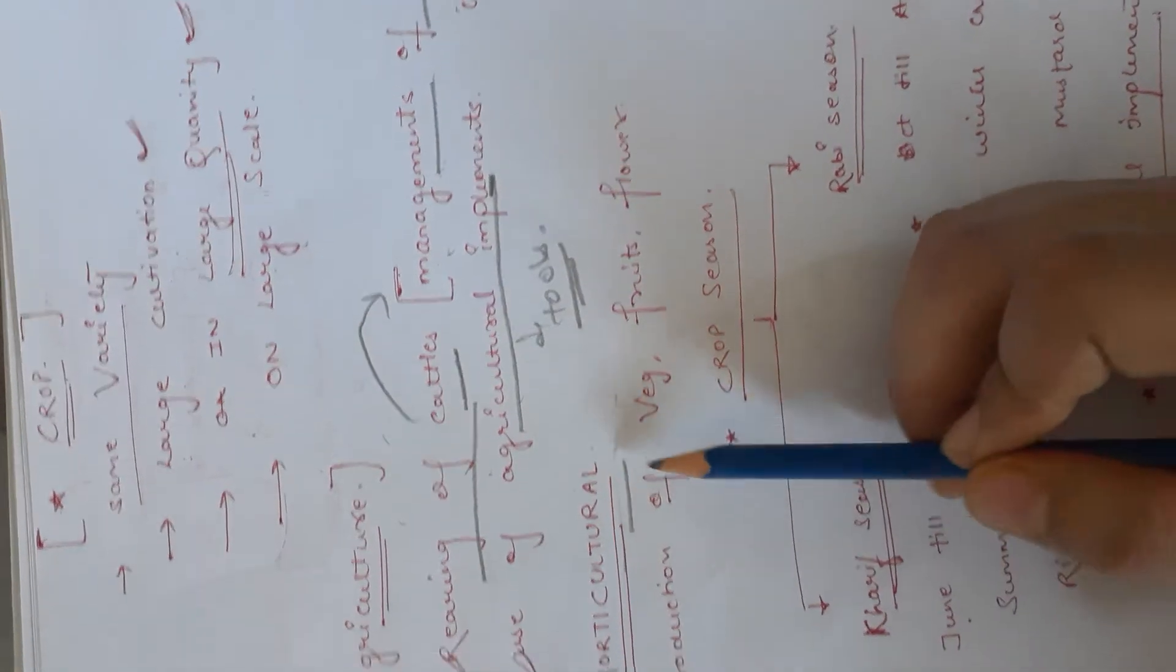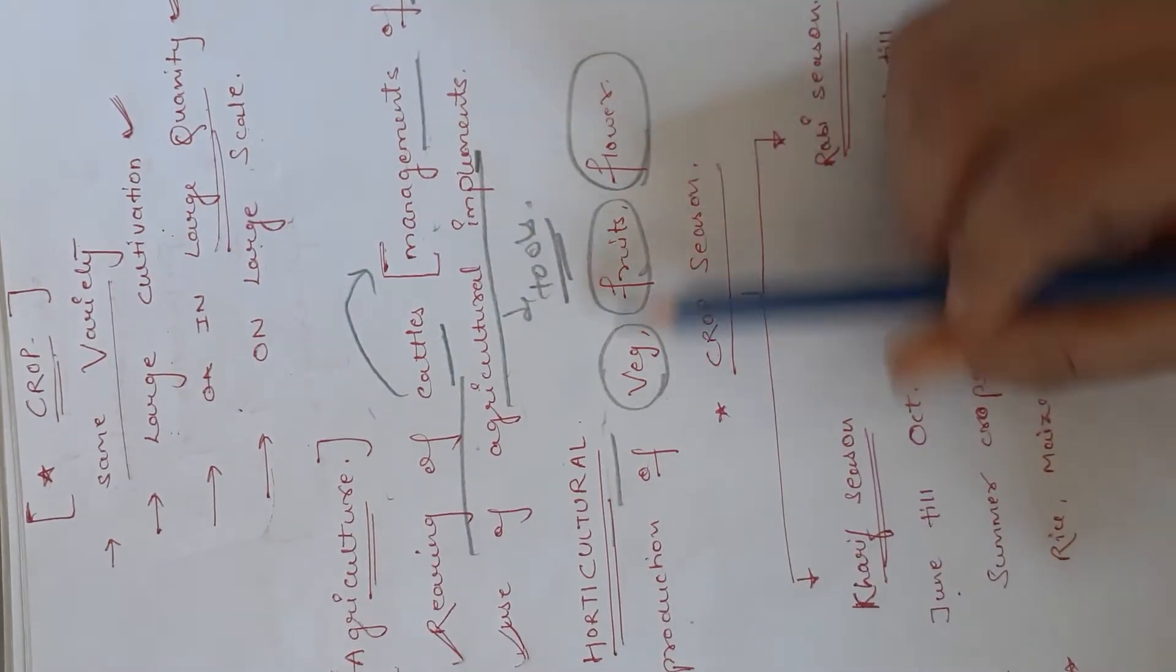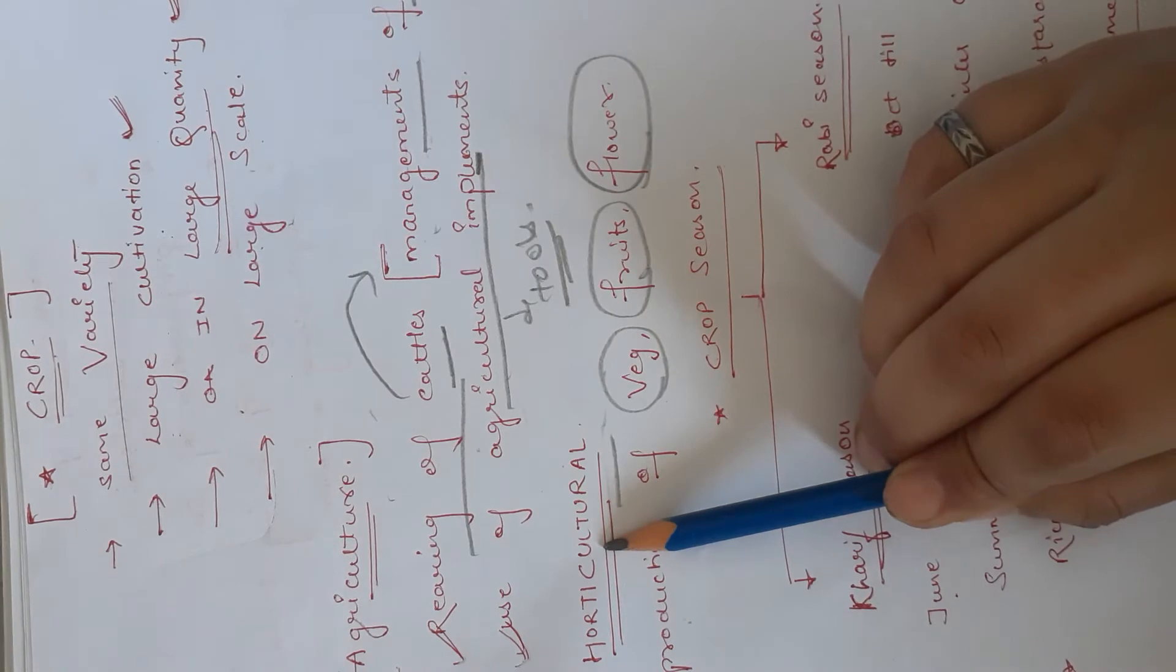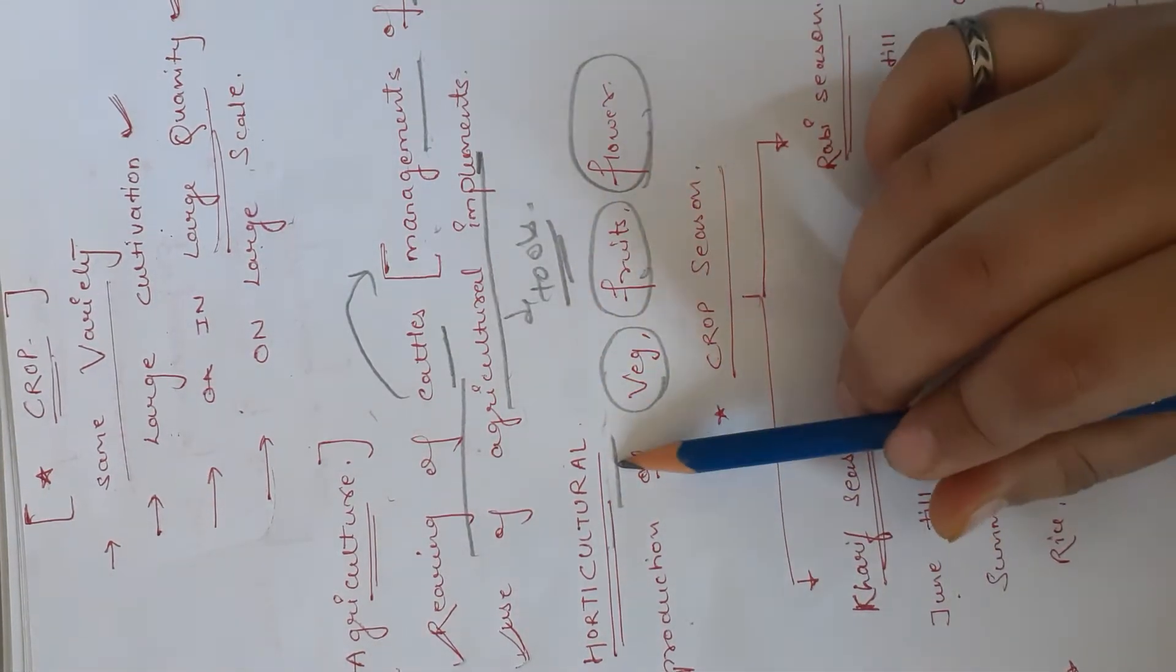Then we discuss horticulture. Horticulture includes production of vegetables, fruits, and flowers.